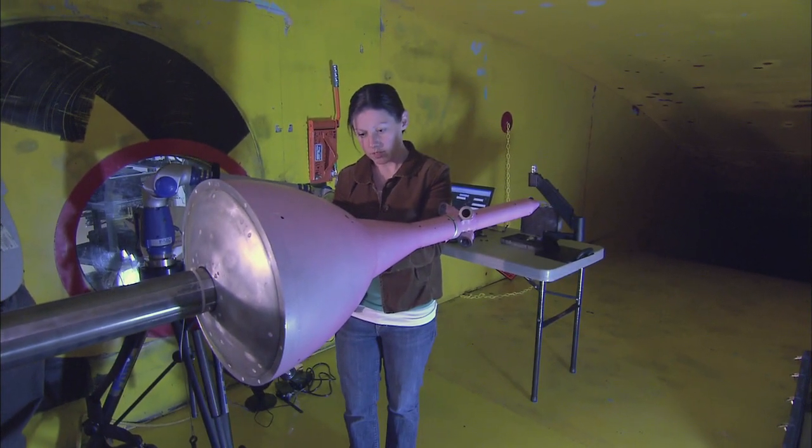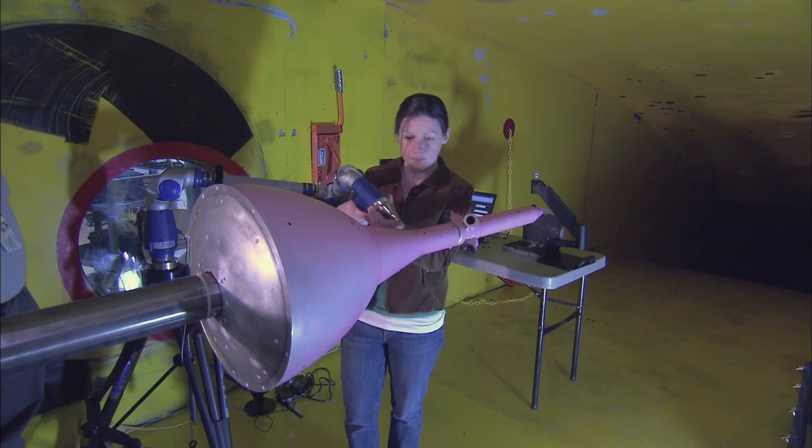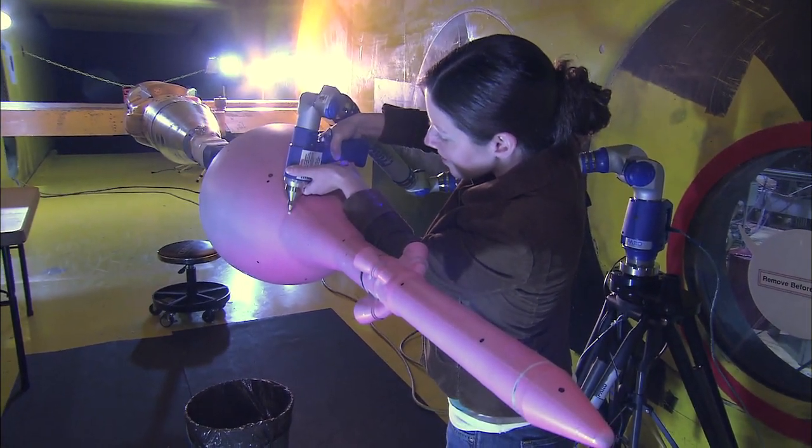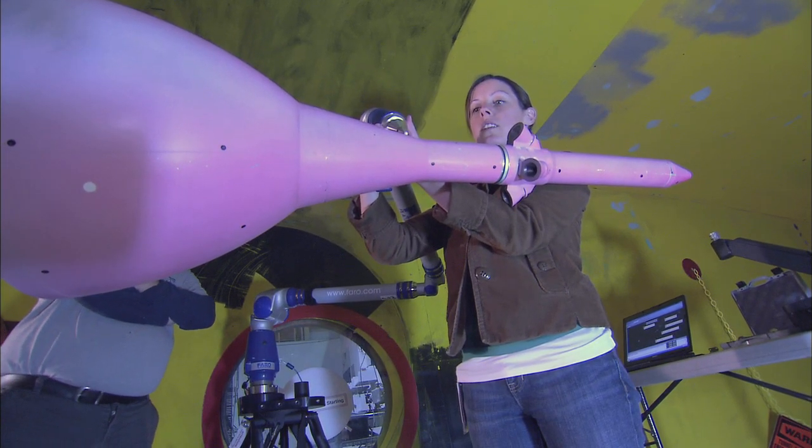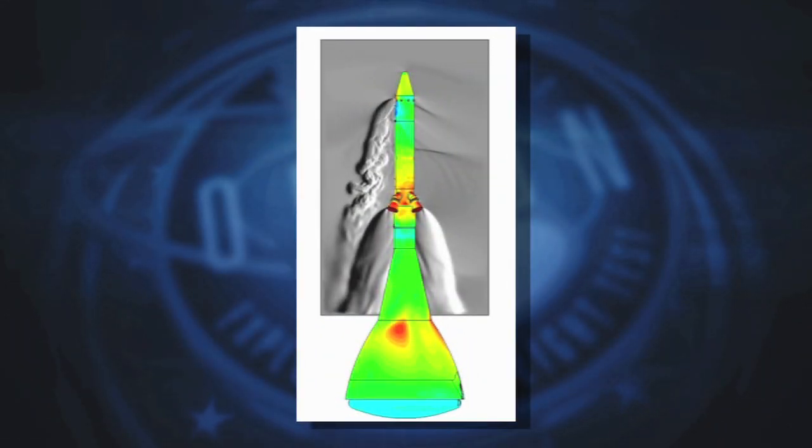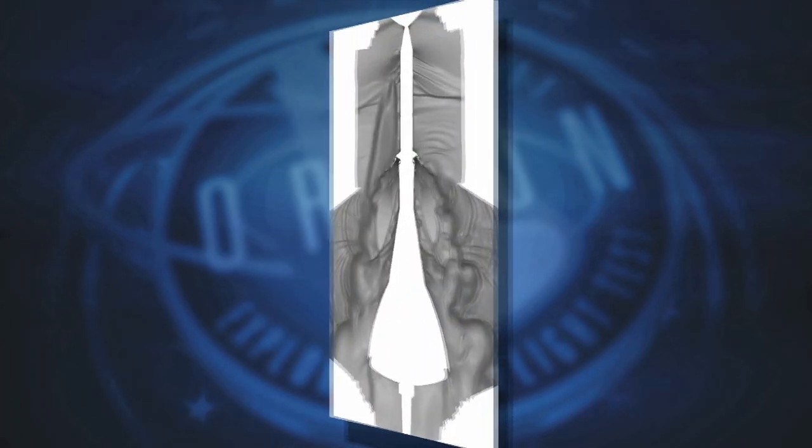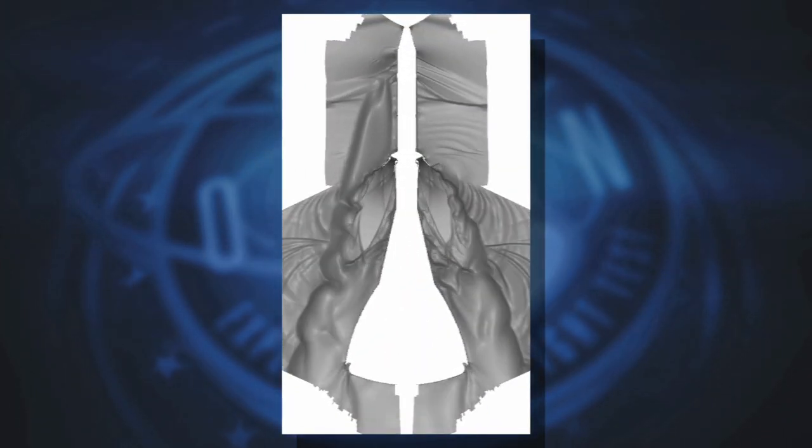The Orion launch abort system required testing in the wind tunnels at Ames to better understand the behavior of the system during a complex variety of launch conditions. The focus of the study was to determine the interaction between the plume from the jets with the airflow effects of separation from the rocket.